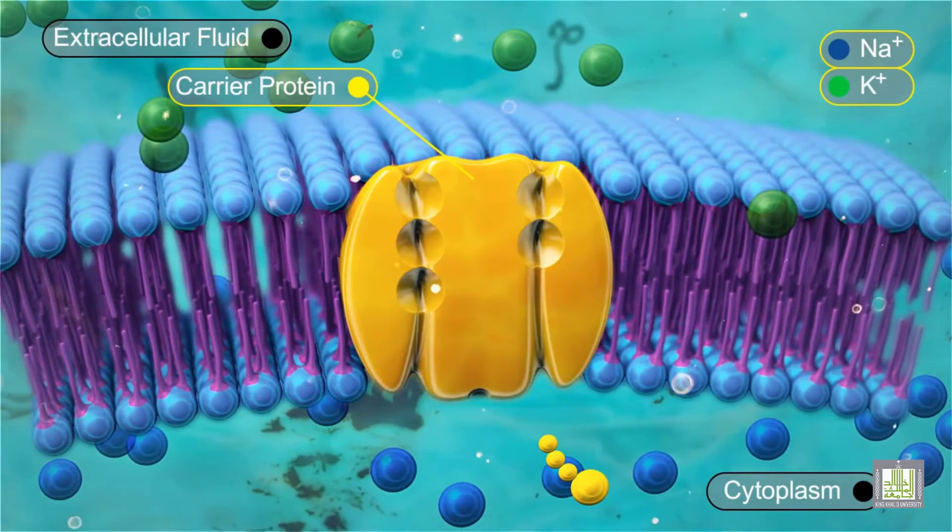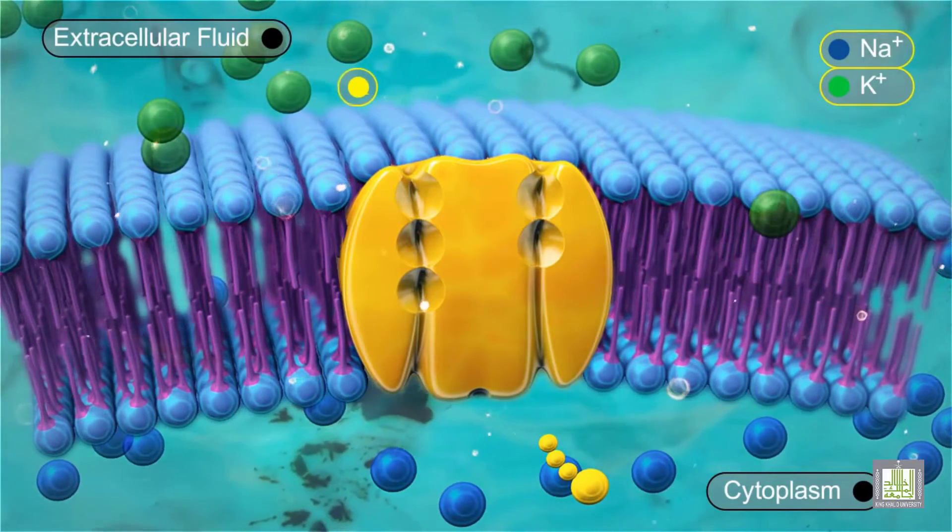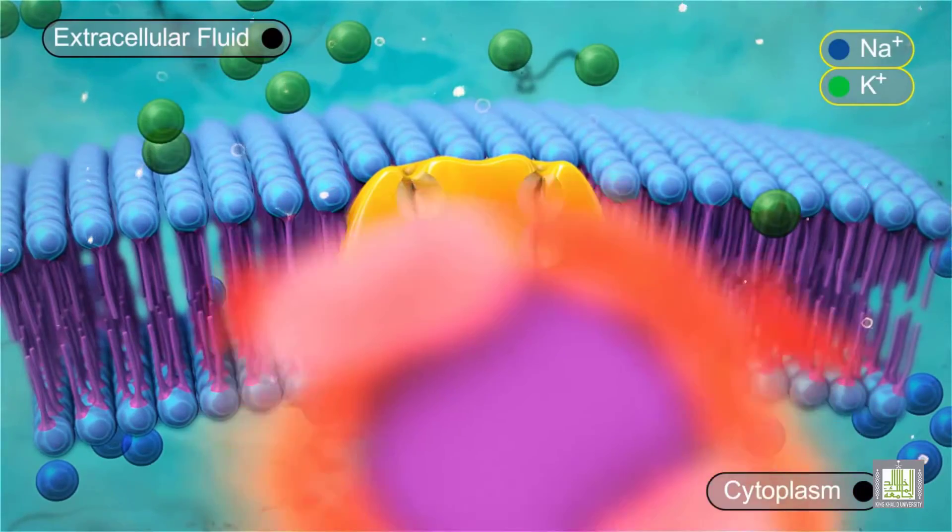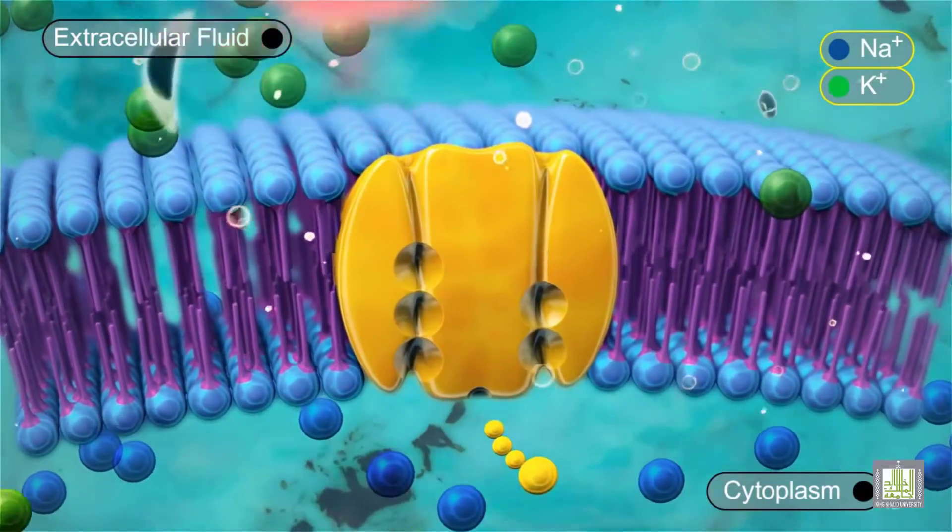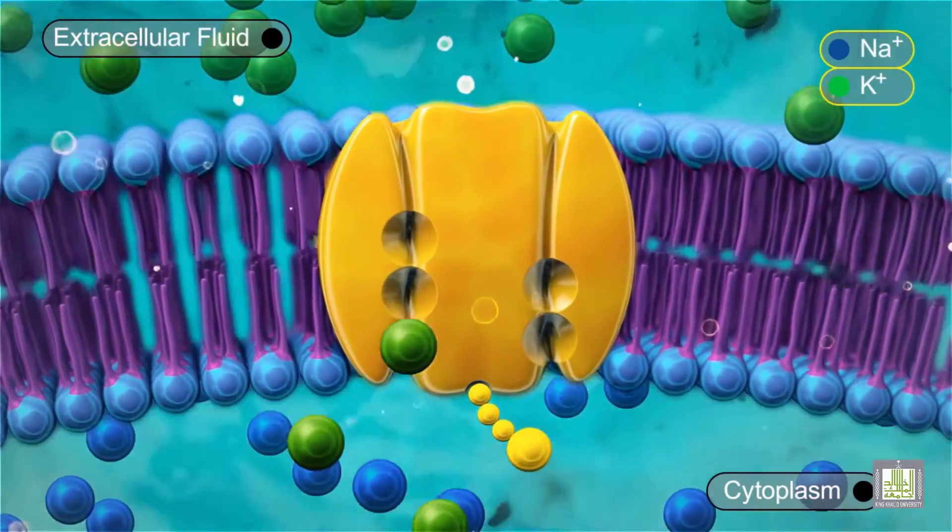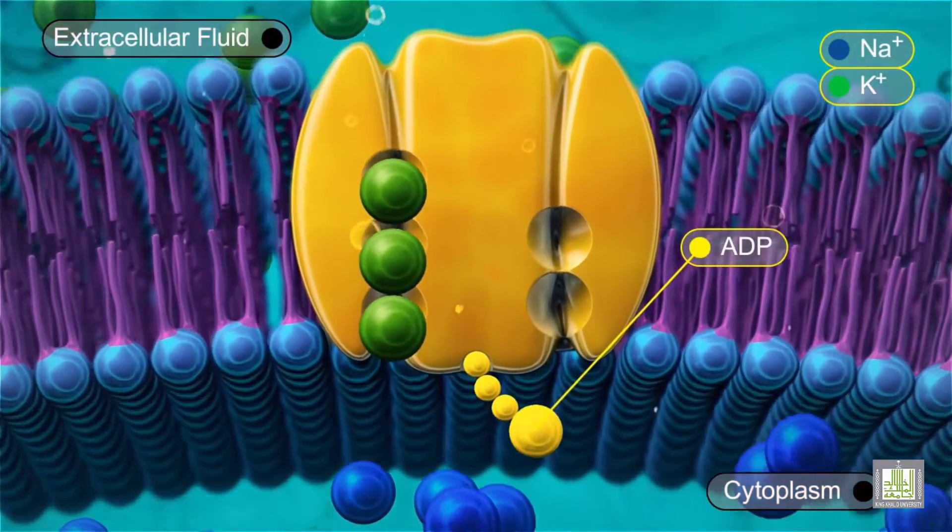The carrier protein for sodium-potassium exchange is embedded in the cell membrane. Three sodium ions and an ATP molecule can bind to the carrier protein on the inside of the cell membrane.